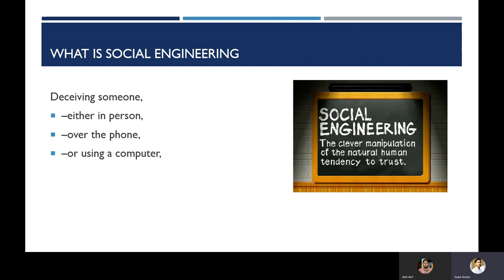Think about it: if you meet a stranger and ask him to share his credentials with you, he won't — because he doesn't trust you. But if you first establish some sort of relationship and build trust, after that he may share things. Trust is what cyber attackers exploit to misguide you. Their purpose is to breach your security. Attackers prey on human weaknesses: laziness, ignorance, hate, fear, attitude, and trust are the things that cause people to fall victim to these attacks.